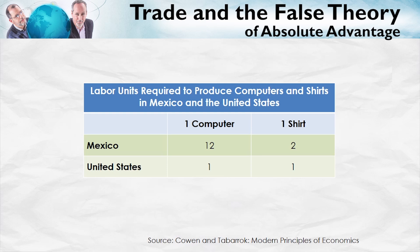Let's consider a simple model. Let's suppose that labor is the only input used in production, and that we can produce computers or shirts. In Mexico, it takes 12 units of labor to produce one computer, and two units of labor to produce one shirt. In the United States, it takes just one unit of labor to make one computer, and one unit of labor to create one shirt.